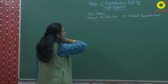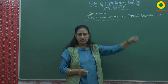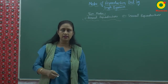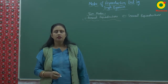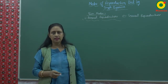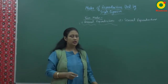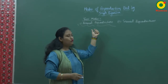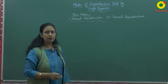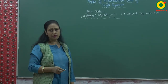Asexual reproduction is a type of reproduction in which only a single parent is involved in the production of offspring. There is no gamete formation, and therefore no fusion or fertilization of gametes takes place.